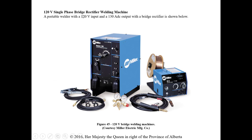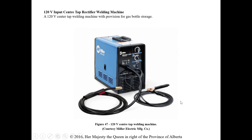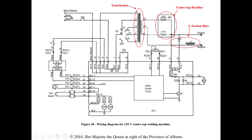A 120-volt single-phase bridge rectifier welding machine has a 120 V input and 130 A DC output with a bridge rectifier. Looking at the schematic: here's the transformer section, the bridge rectifier, and then the choke filter — with the welding electrodes as the load. Another example is a center-tap rectifier: transformer, center-tap diodes for rectification, then an L-section filter with a capacitor and choke filter in series with the load.